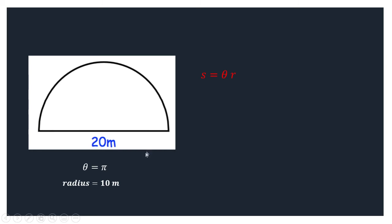Following this formula, since the given is in radians, we can use S is equal to theta times R. By substitution, we can have pi times 10 meters. Simplifying, we can have 10 pi meters, or that would be approximately 31.42 meters.